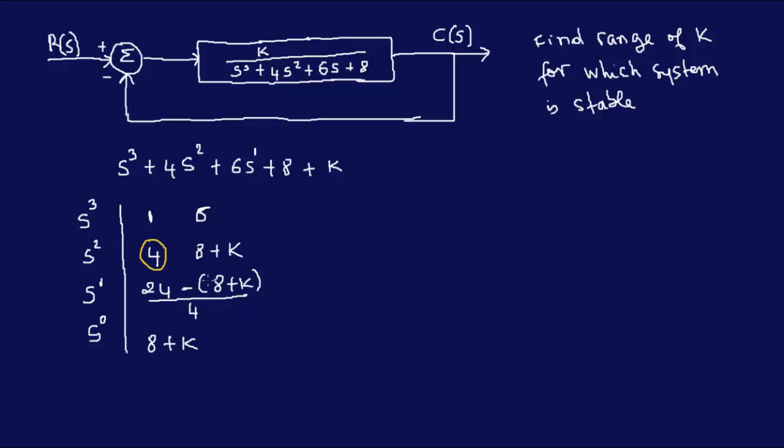Now, for the system to be stable, your first row column of your Routh criteria got to be positive. So if this is supposed to be positive, what's k? So if this is positive, that means k is greater than minus 8. So we already have one k, one condition.